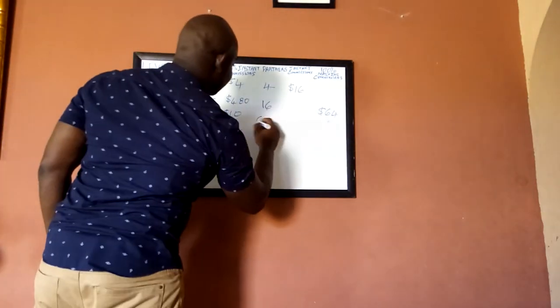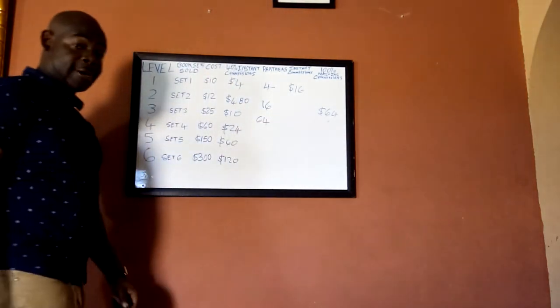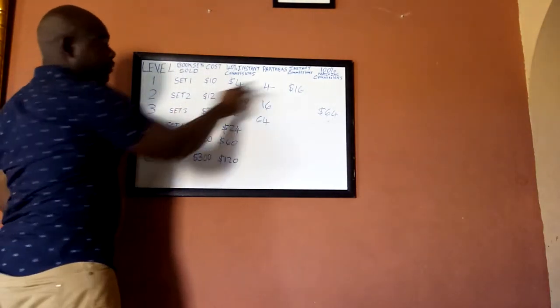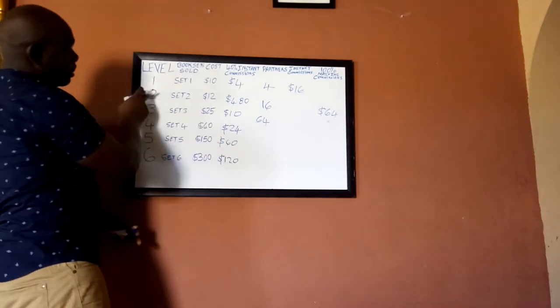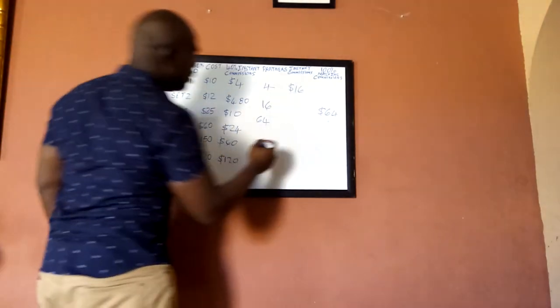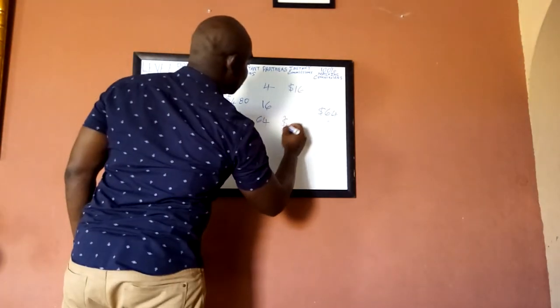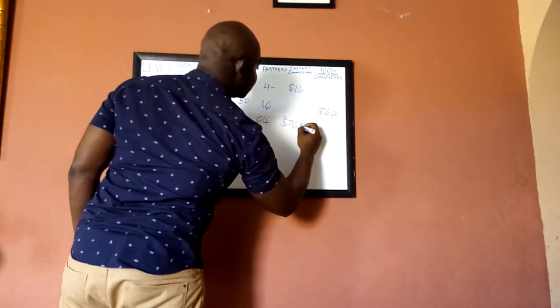When these persons get their four, now it brings 64 members here. These people would earn enough to buy their second book because they would have earned 16, so they automatically match your level, so you get paid 40% which is $4.80. So you get paid $76.80 right here.